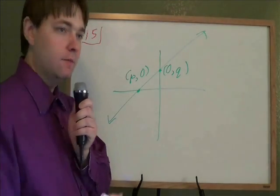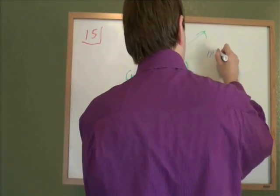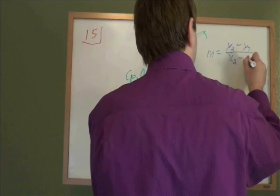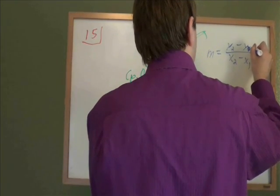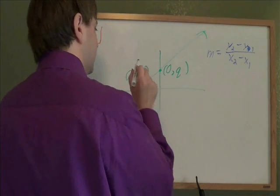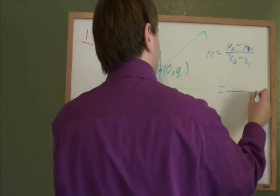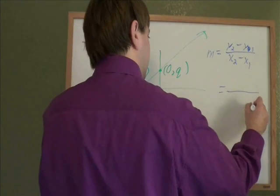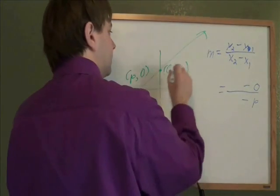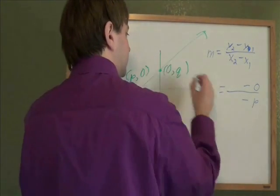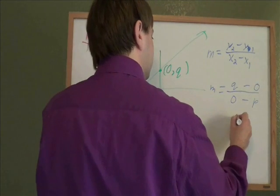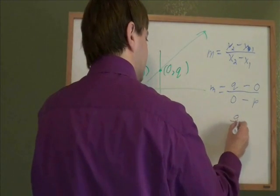To find the slope of this line, we just use the slope formula. M equals y2 minus y1 over x2 minus x1. And it doesn't really matter which point is which, so I'm just going to make this be point 1 and this be point 2. So point 1, the x was p, the y was 0. The formula has those minuses. And then point 2 will be 0q, so the x is 0, and the y is q. Q minus 0 is q, 0 minus p is negative p.